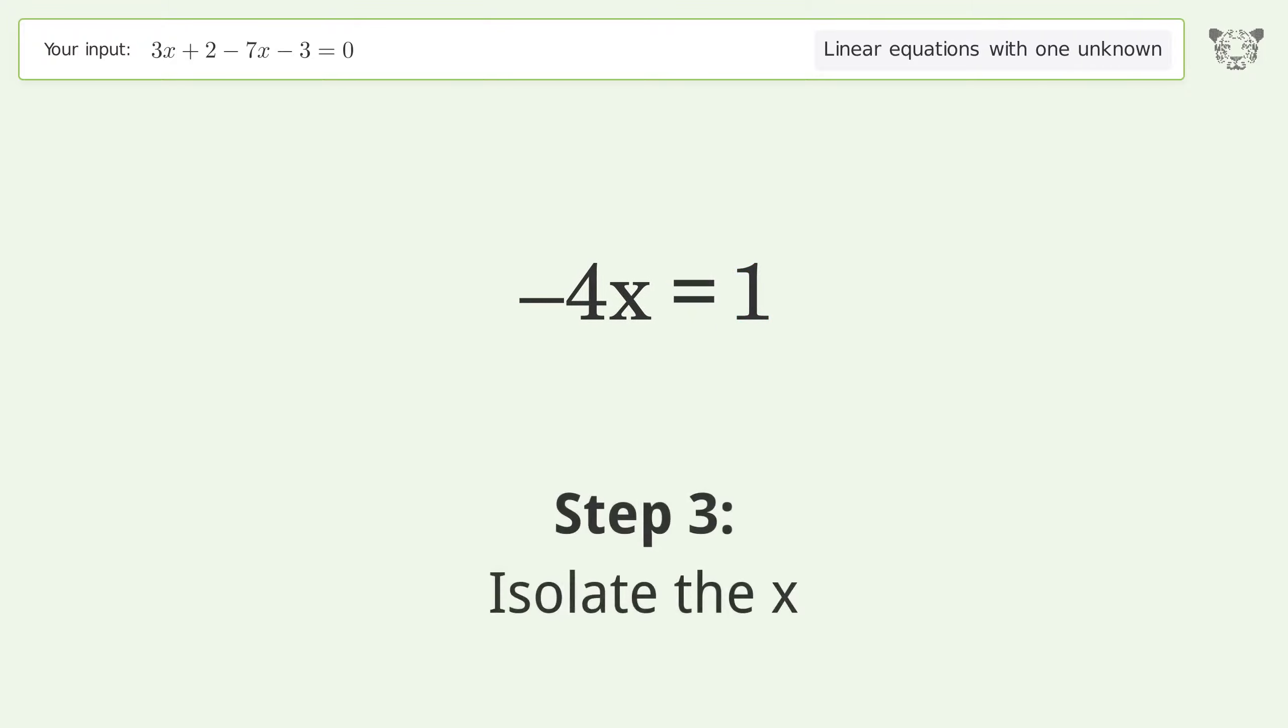Isolate the x. Divide both sides by negative 4. Cancel out the negatives.